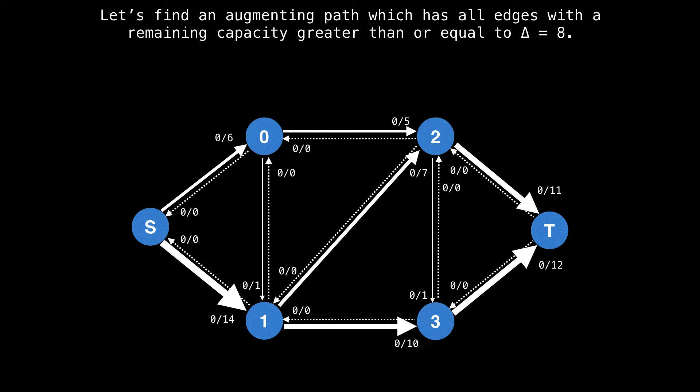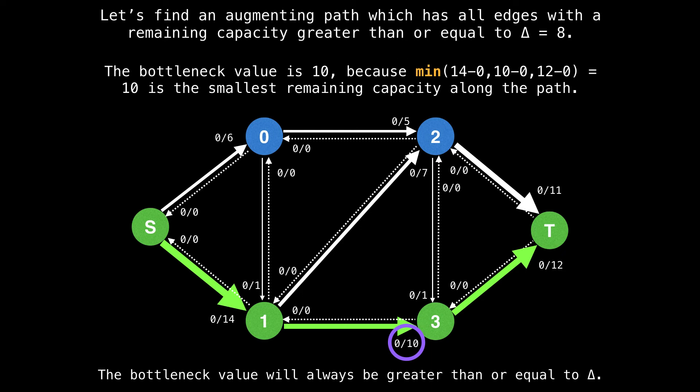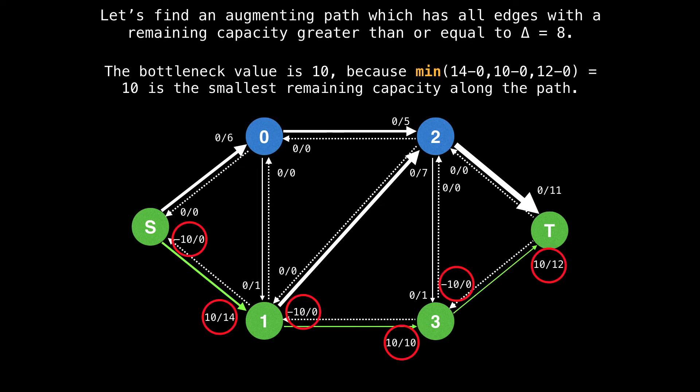Now that we have delta, we can start finding paths from s to t, which have a remaining capacity greater than or equal to eight. Start our search at the source. From the source, there's only one edge which has a remaining capacity of eight or more, which is the edge with the capacity of 14 going downwards. Then there's the edge sideways with the remaining capacity of 10 we can take. And finally, an edge with the remaining capacity of 12 going upwards, which we can also take. Now we've reached the sink. So we can find the bottleneck value, which is 10, because 10 is the smallest remaining capacity along the found path. Next augment the flow along the path. I scale down the size of each edge to reflect how much remaining capacity they have left.